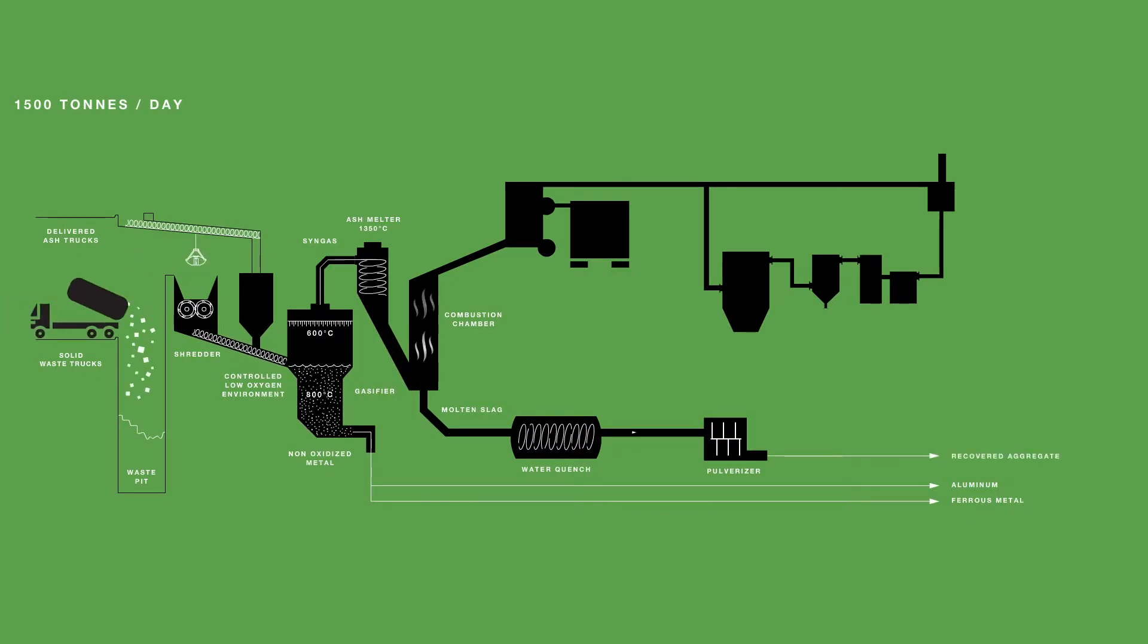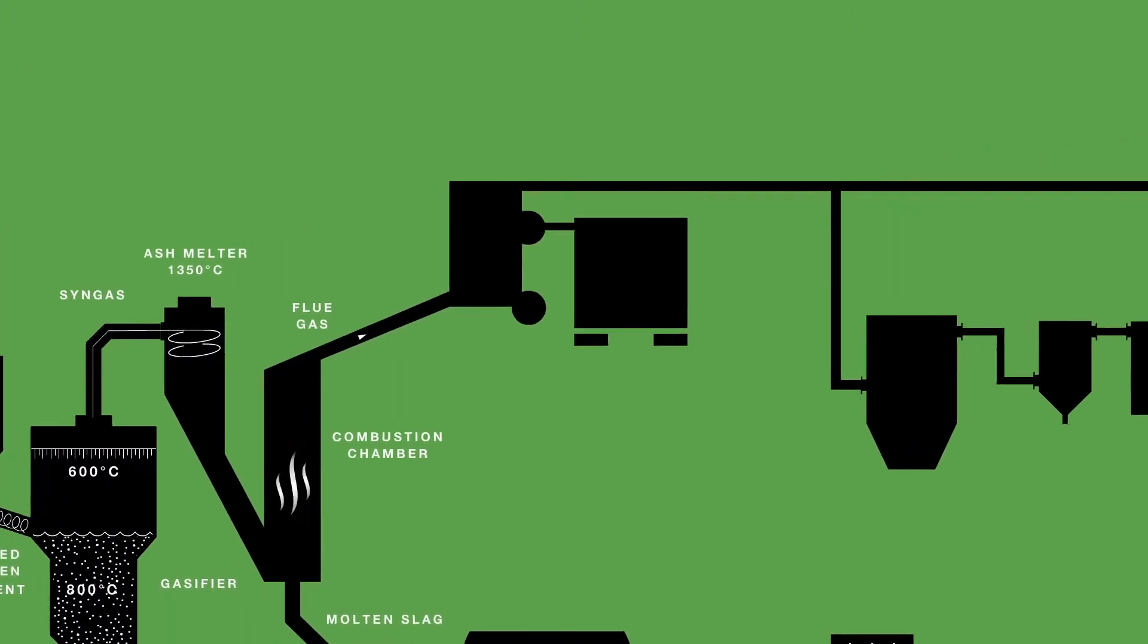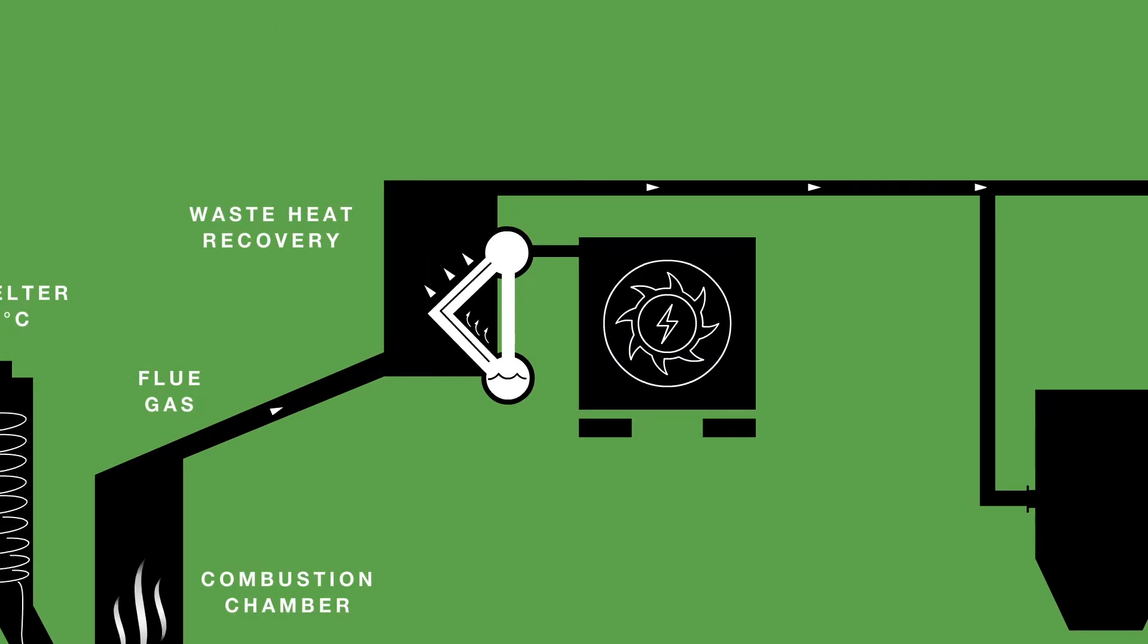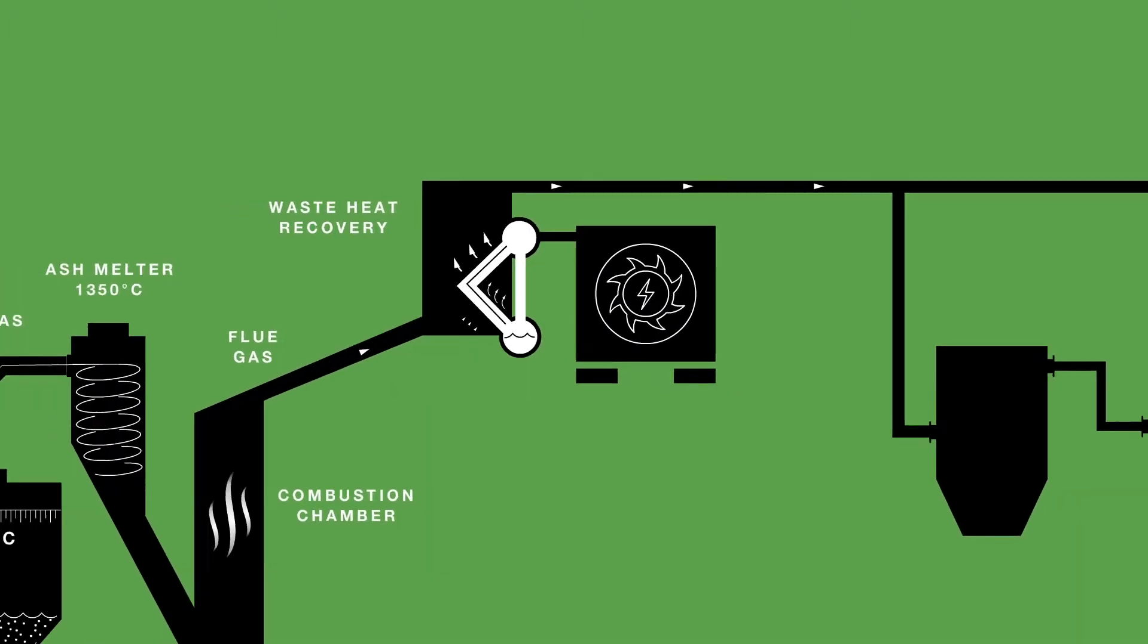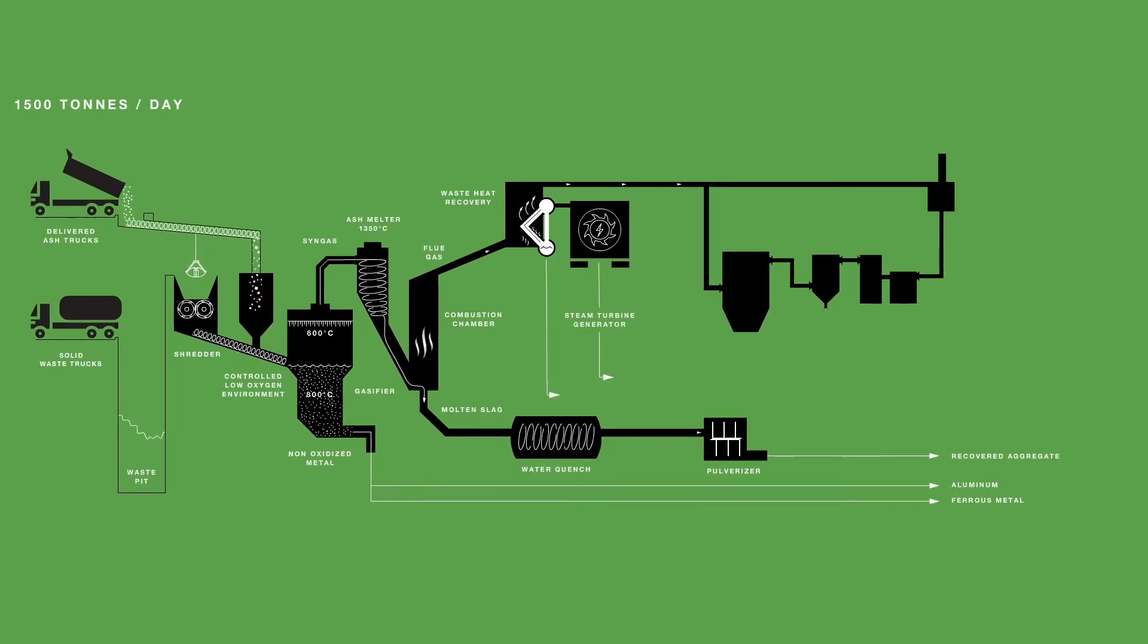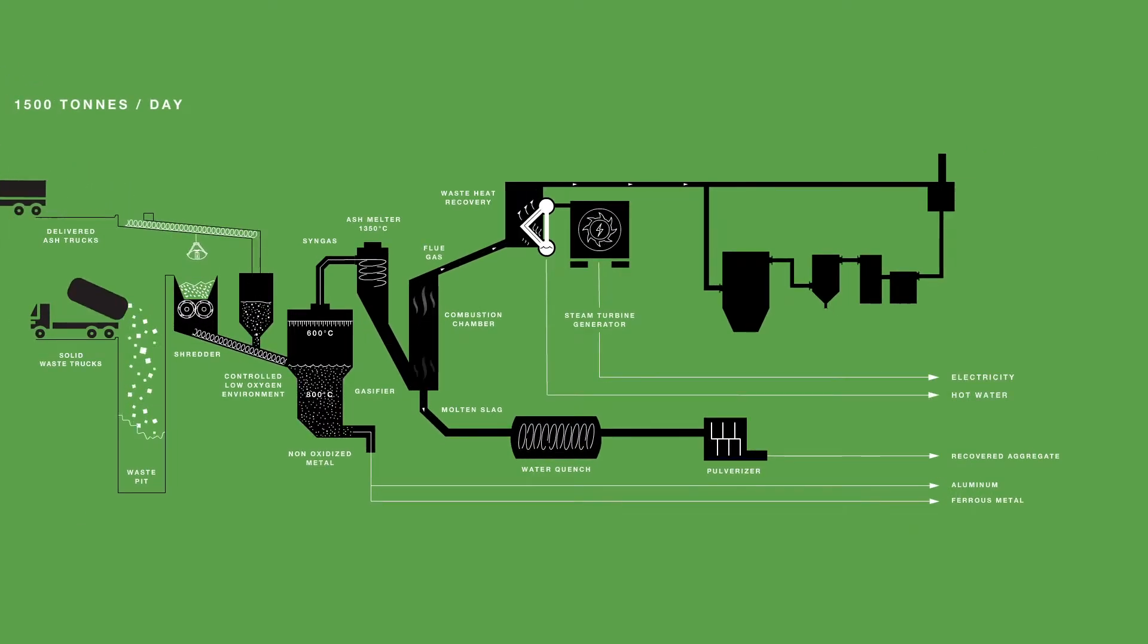The flue gas then enters the waste-heat recovery boiler, which converts the thermal energy into steam and hot water. That steam is sent into the turbine generator, where it produces over 36 megawatts of power, and the hot water can be used for district heating and cooling.